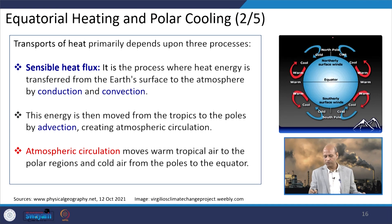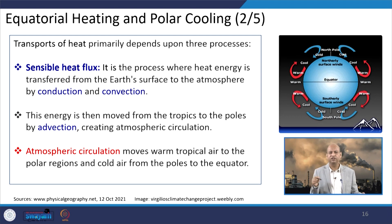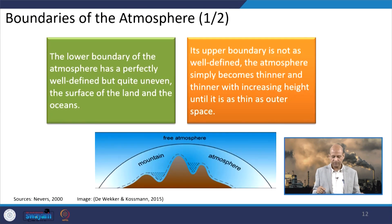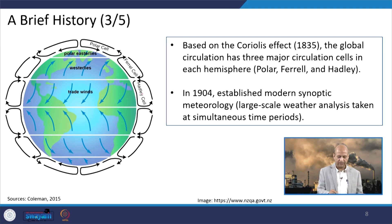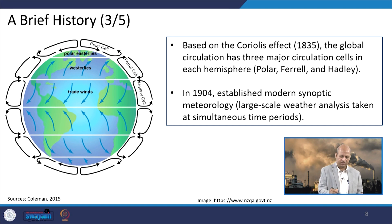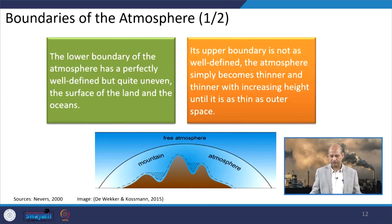Atmospheric circulation moves warm tropical air to the polar regions and cold air from the polar regions to the equator, as warm air rises and then moves toward the pole while cool air moves toward the equator. As we have seen with the Hadley, Ferrel, and polar cells, there are three particular cells that help in this movement of temperature and wind — it is not a single cycle. The Ferrel cell really works like a gear, enabling further movement of this air mass.